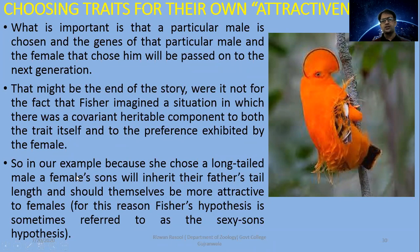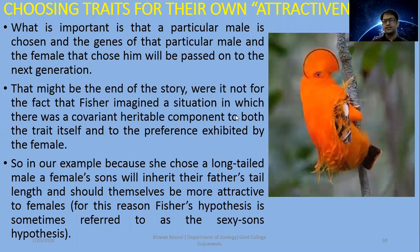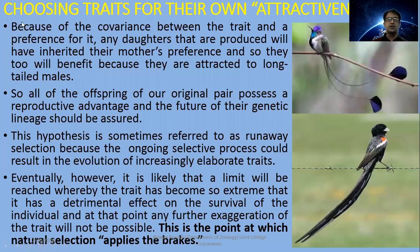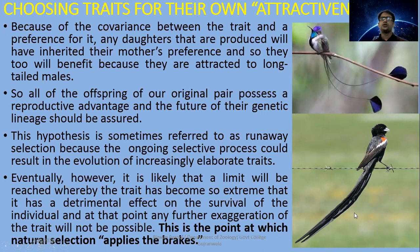Because a female chooses a long-tailed male, her sons will inherit their father's long tail. For this reason, Fischer's Hypothesis is also known as the Sexy Son Hypothesis. Choosing mates for their own attractiveness — because of the covariance between the trait and a preference for it — means any daughters produced will have inherited their mother's preference. They too will benefit because they are attracted to long-tailed males. So tail length is also a basis of attractiveness, even if it is not always beneficial.